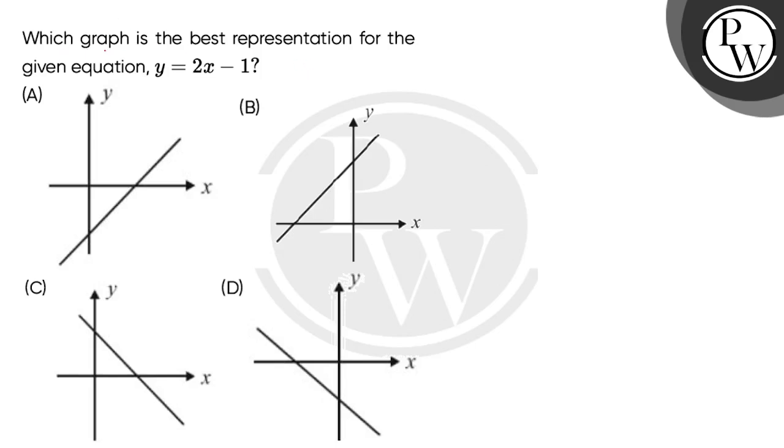Let's read the question. Which graph is the best representation for the given equation y equals 2x minus 1? The given equation is y = 2x - 1, which is a linear equation in two variables, so it will represent one line. Now we have to find which graph represents this equation.